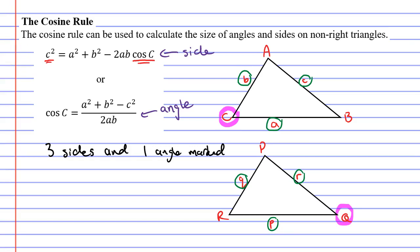Now if we were to apply it to the triangle below, because we know what angle q is, we would say cos capital Q, and on the left side of the equal sign we would have lowercase q squared.